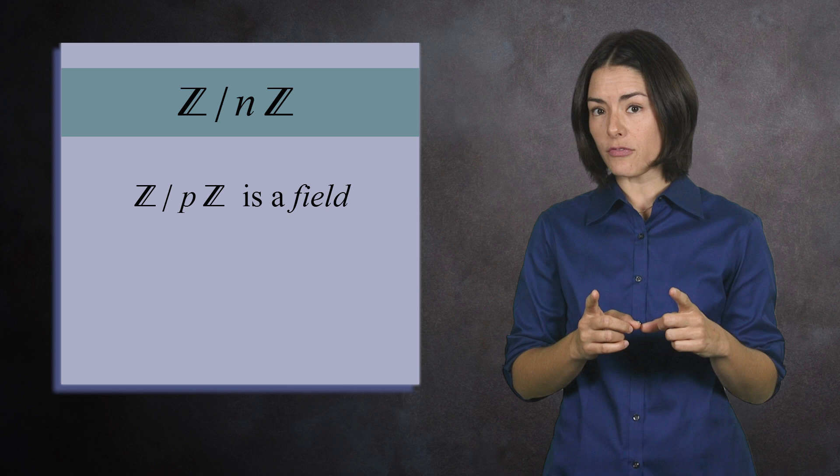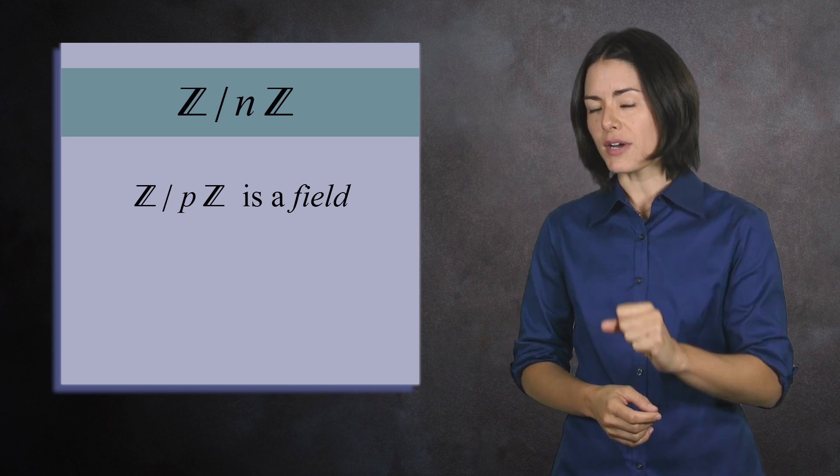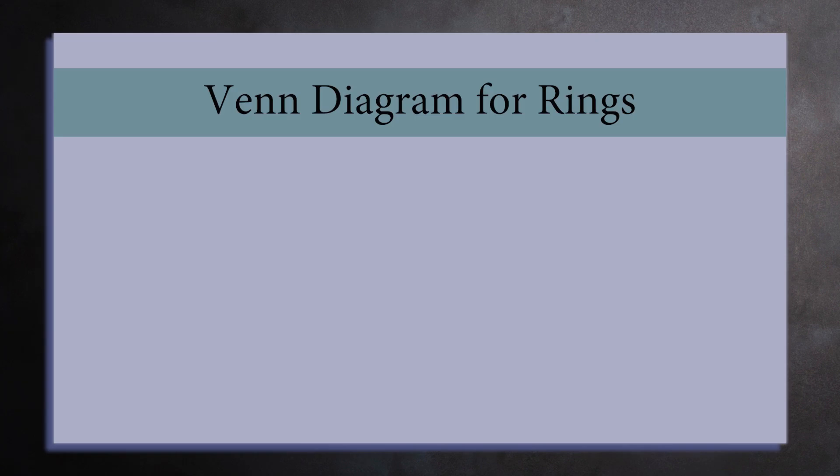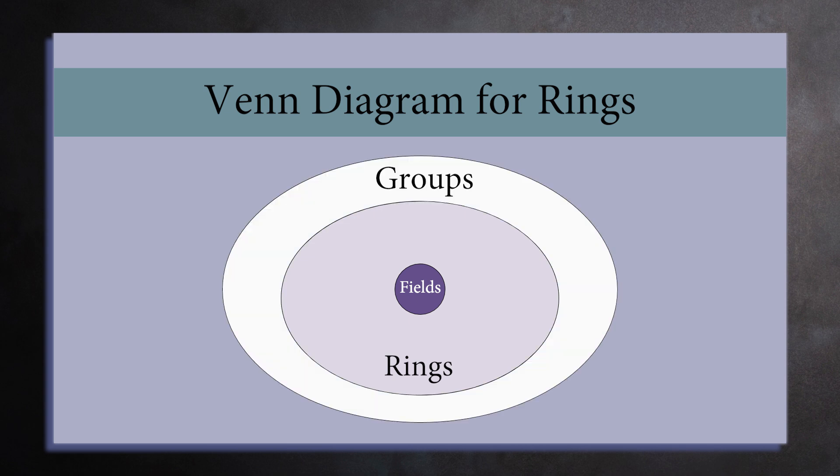Here's where you need to be careful. Every field is a ring, but not every ring is a field. If you were to draw a Venn diagram, the set of all fields would lie inside the set of all rings. And since every ring is a commutative group under addition, the set of rings lies inside the set of groups.